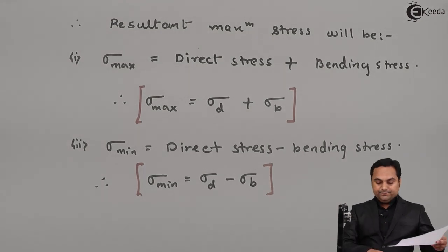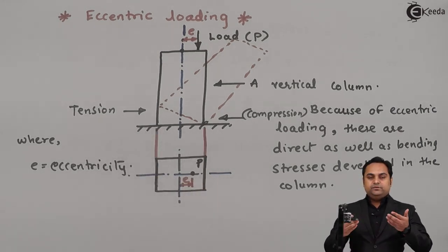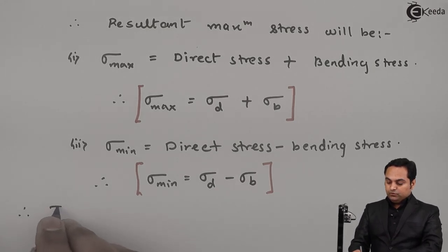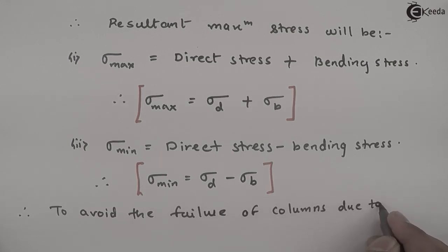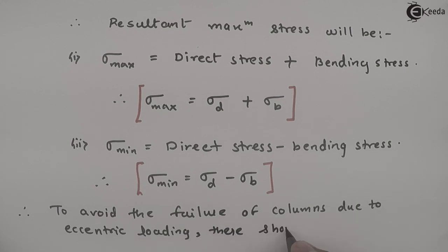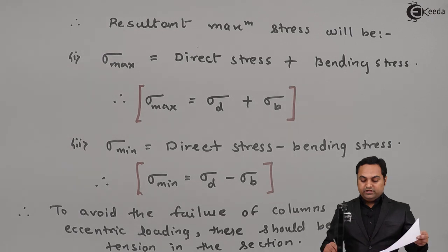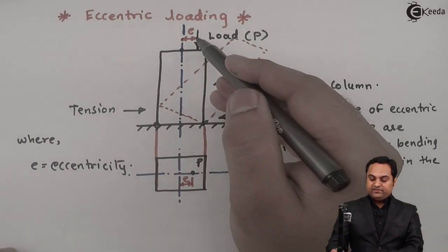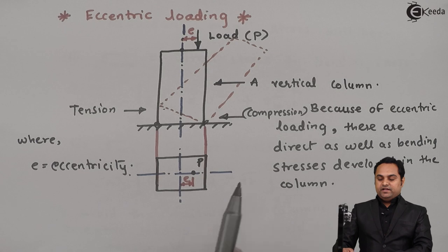In order to avoid the column from getting lifted, there should be compression at both the ends so that both ends are pressed to the ground. Tension needs to be avoided. Therefore, to avoid the failure of columns due to eccentric loading, there should be no tension in the section. Only compression should be there, and that will result in the safe operation of the column. If tension exists at one end, the column would be lifted from its place and we have to avoid this condition.